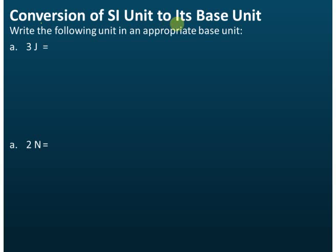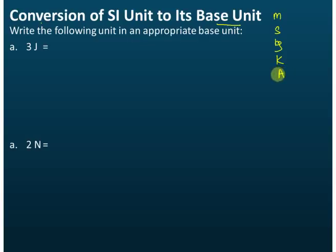This lesson covers conversions of SI units to base units. Base units are units of base quantities. Examples of base units are meter (length), second (time), kilogram (mass), kelvin (temperature), and ampere (electric current). In exams, you may be given a derived unit and asked to rewrite it in appropriate base units — meaning meter, second, kg, kelvin, or ampere.